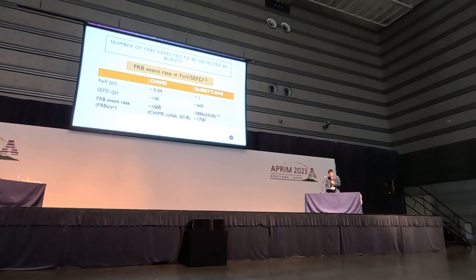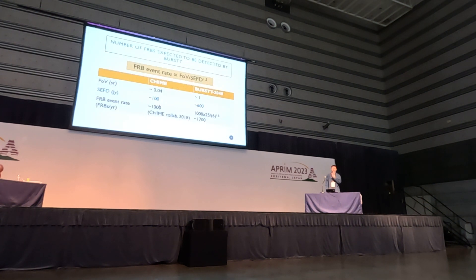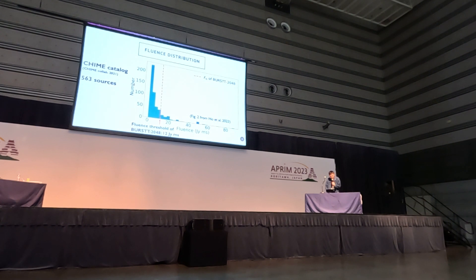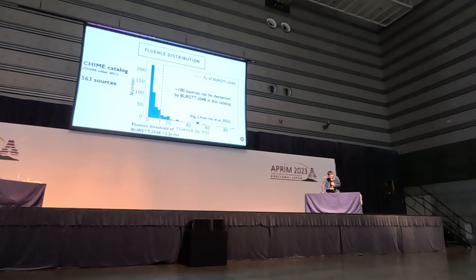The first step in my paper is to estimate the number of FRBs that can be detected by BURST. I simply use the equation that the FRB detection rate is proportional to the field of view divided by the sensitivity to the power of 1.5. Using the parameters of the two telescopes and plugging into this equation, BURST is about 25 times better than CHIME in field of view, and about 6 times worse in sensitivity. Scaling that, we get about 1,700 FRBs per year for BURST. We then use the CHIME catalog with about 563 sources and apply the flux threshold for BURST, which is about 12 Jy·ms, and the sources above this cut are those that can be detected by BURST — there are about 100 sources.